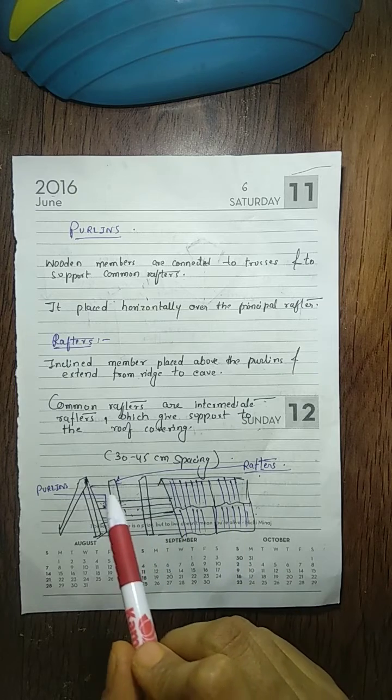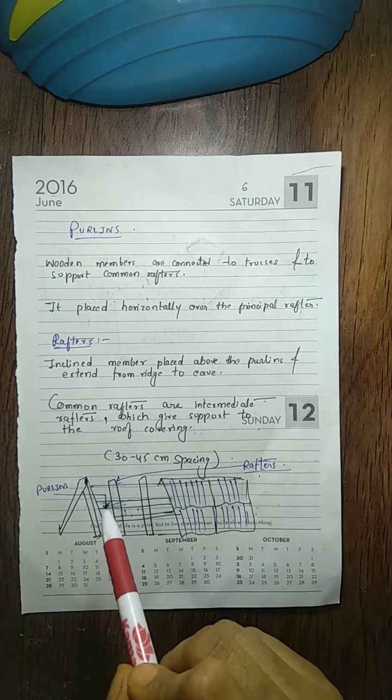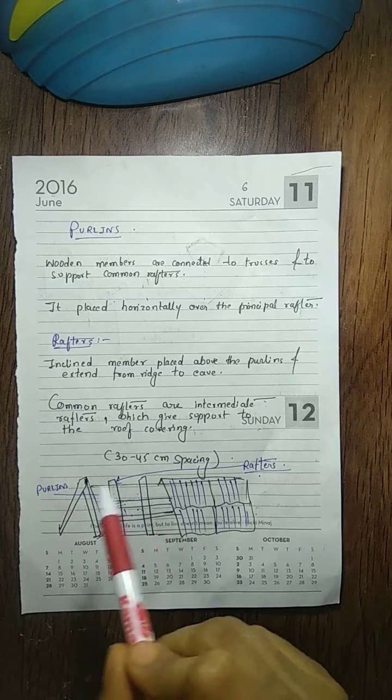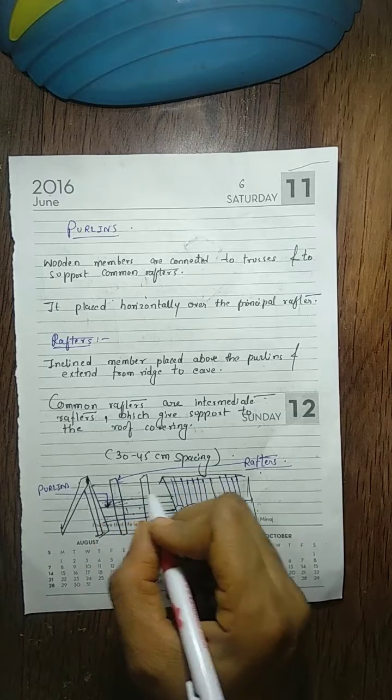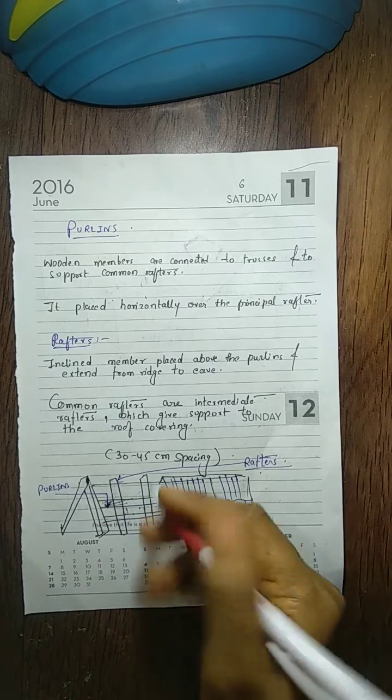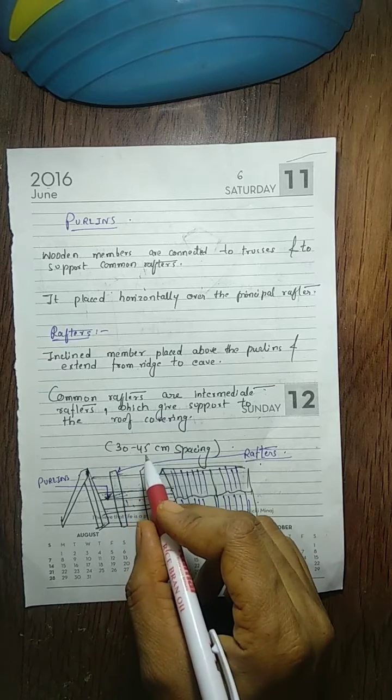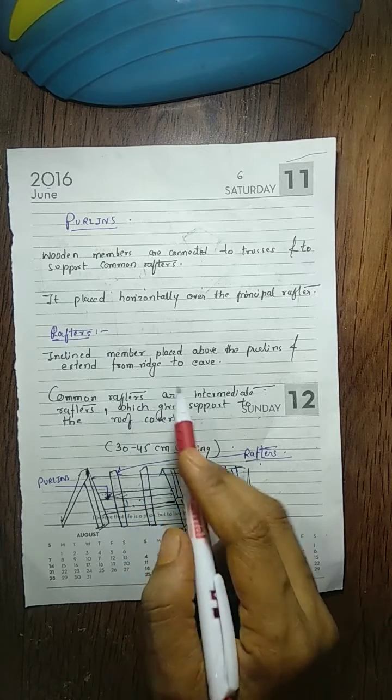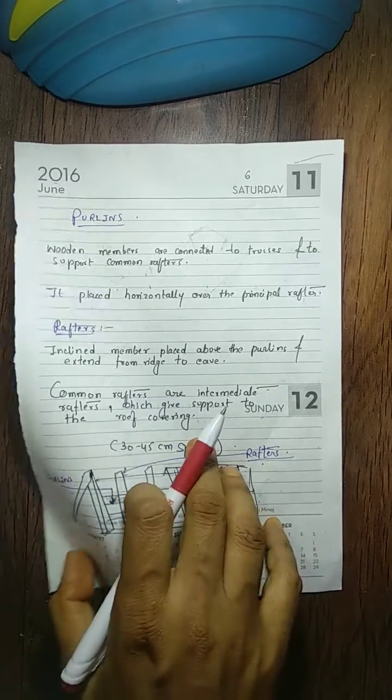In this diagram we easily explain perlin and rafter. You should see here this is the perlin - perlin is the horizontal member. And this is the rafter, which should be an inclined member above the perlin. Both help to support the roof.